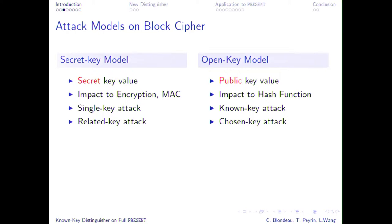The typical models can be distinguished into two kinds. The most classical is the secret key model, where the key input to the cipher is not known to the attacker. This is really useful if we want to evaluate the encryption capabilities of the block cipher — whether to encrypt or to authenticate. We can distinguish between single key and related key attacks. We also have a much more generous model, which is the open key model. In this case, a bit surprisingly, the key is known to the attacker. But it can still be relevant to analyze the security of a block cipher if we use it to build a hash function, because in that case the attacker is really going to know the key.